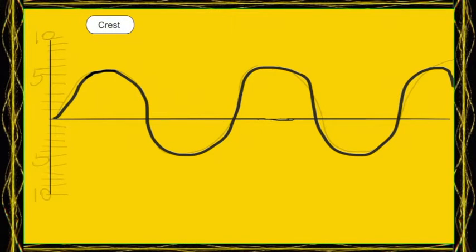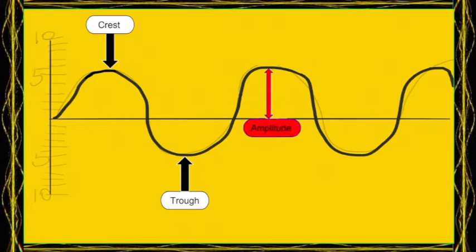It's the crest and it's the trough. Crest is the tallest point of the wave, trough is the lowest point of the wave. And it's the amplitude. Amplitude is how big the wave is. And it's the wavelength. Wavelength is crest to crest or trough to trough.